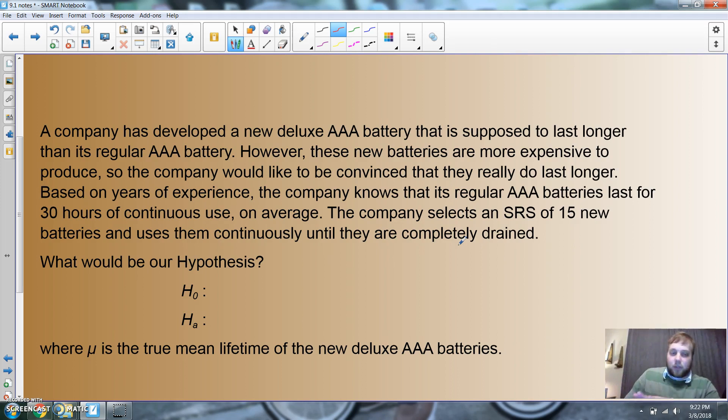What would be our hypothesis? Well, we're dealing with average, so we're going to say our null would be μ = 30. We're going to assume these new batteries last the same length until proven otherwise. My alternate - because it costs more money to make these new batteries - I want to see if actually the mean length becomes greater than 30.